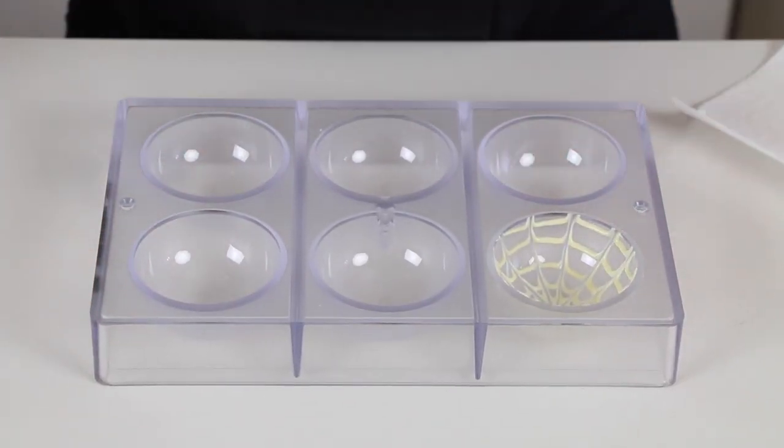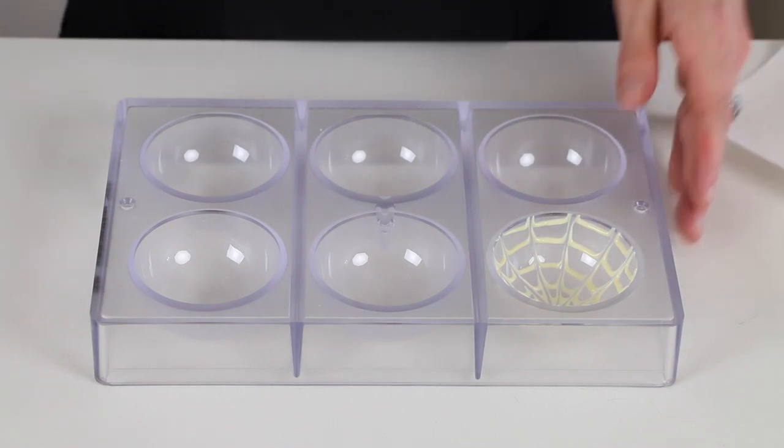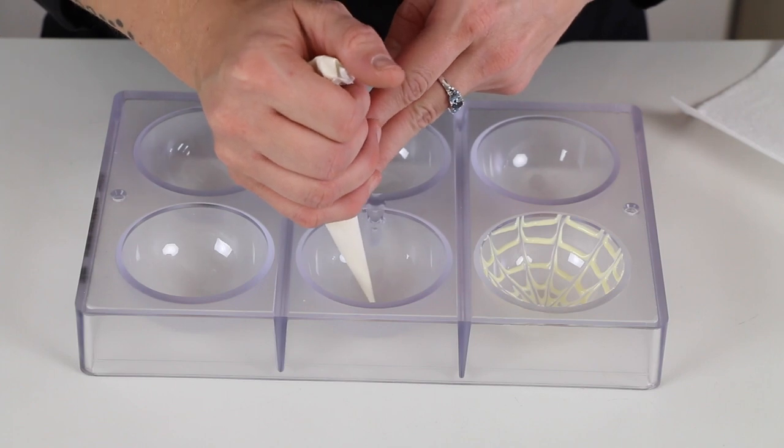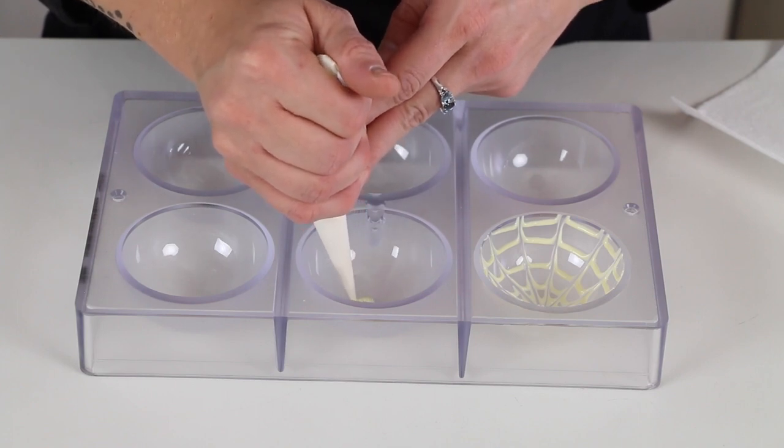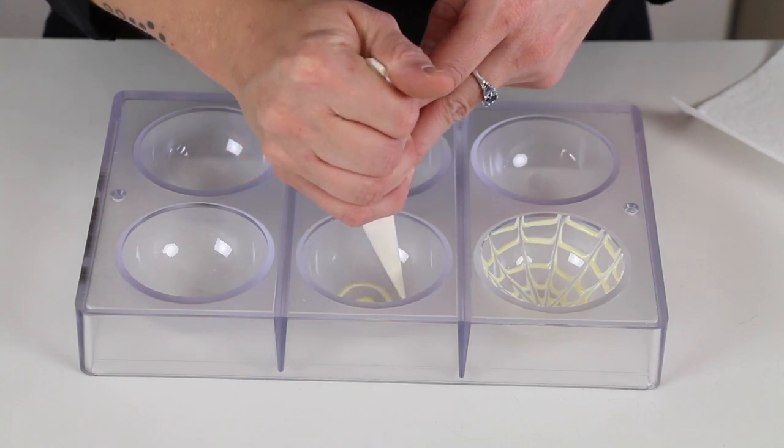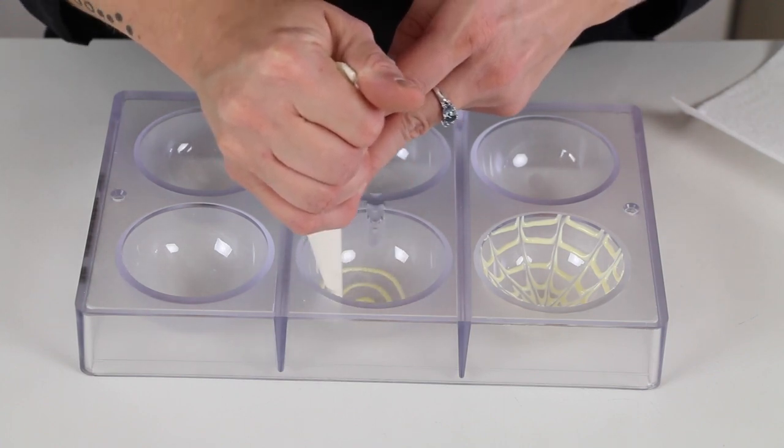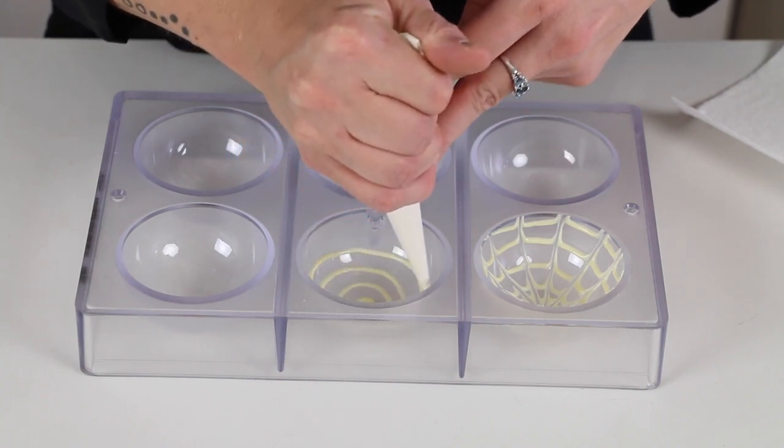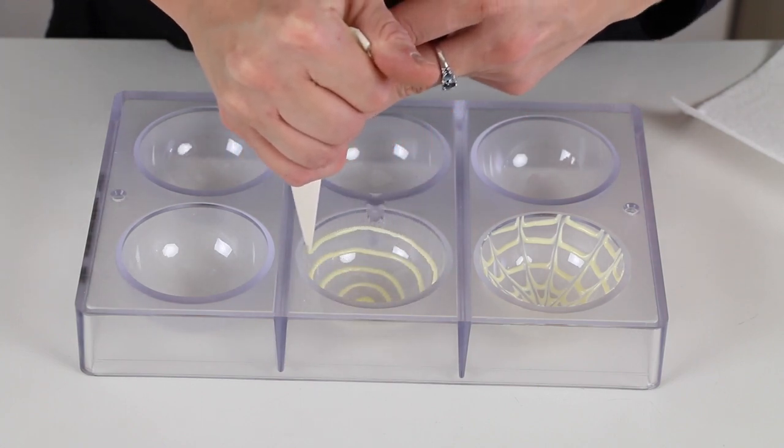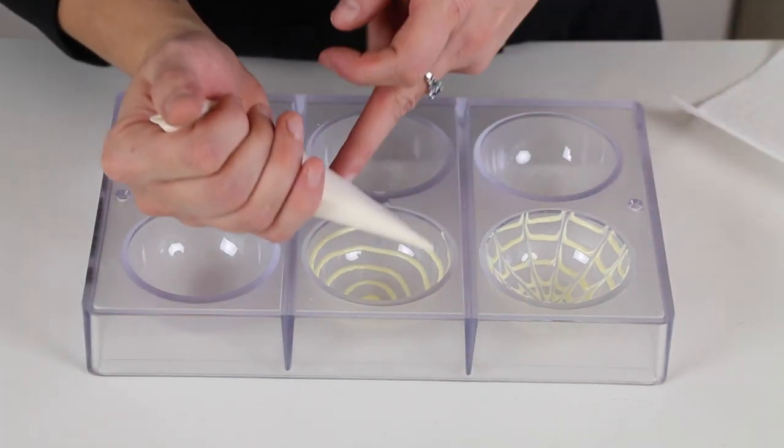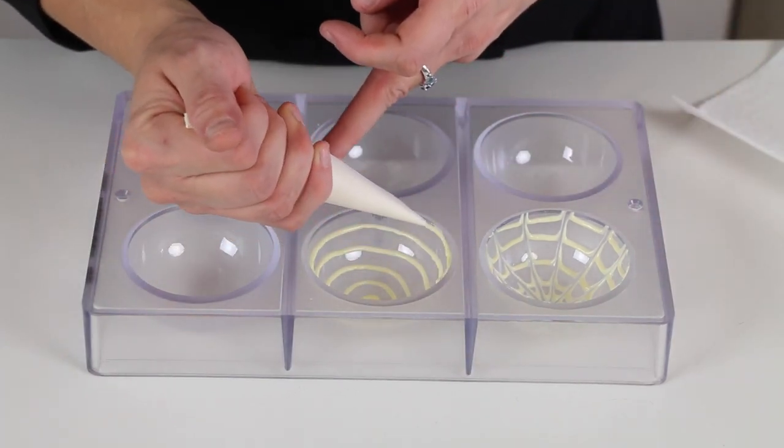And then I'm going to do that in the next one. And you can play around with how you like the spacing. If you like the spiral to be super close together. And then how far apart you like to do the pull lines, you can just experiment and decide how you want to do it.